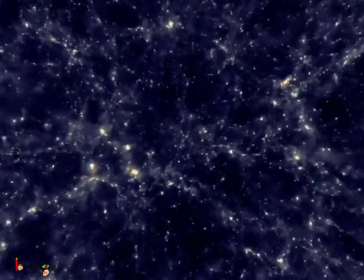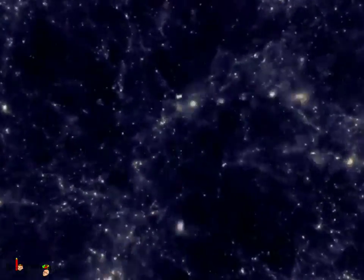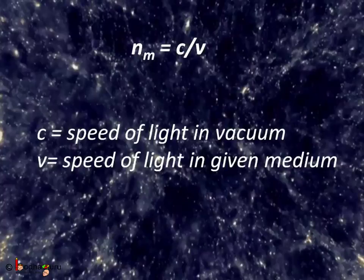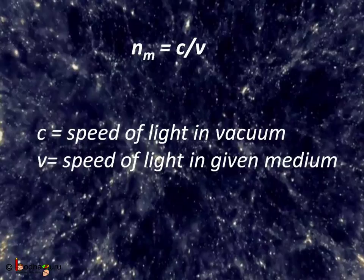We know light changes its speed when entering a different medium. Say light is passing from vacuum to a medium M. If C is the speed of light in vacuum, which is 3 × 10⁸ meters per second, and V is the speed of light in a given medium, then the absolute refractive index of the medium Nm is equal to C divided by V — that is, speed of light in vacuum divided by speed of light in the given medium.